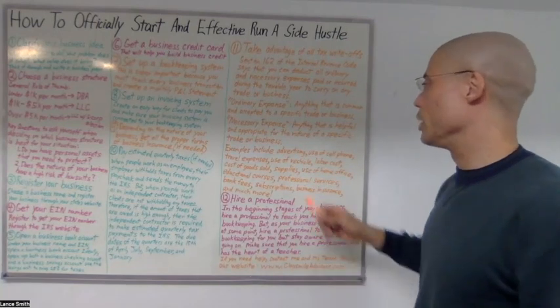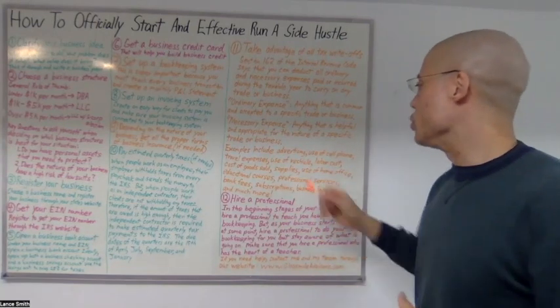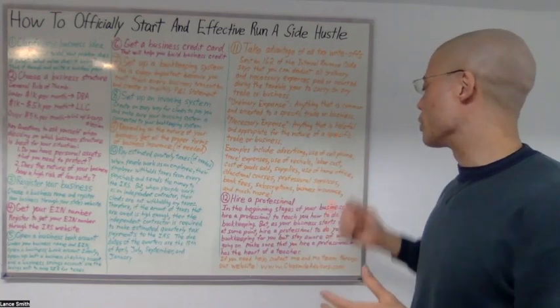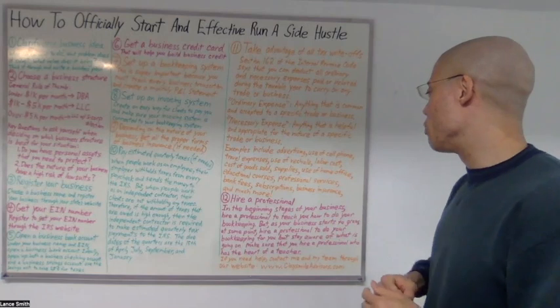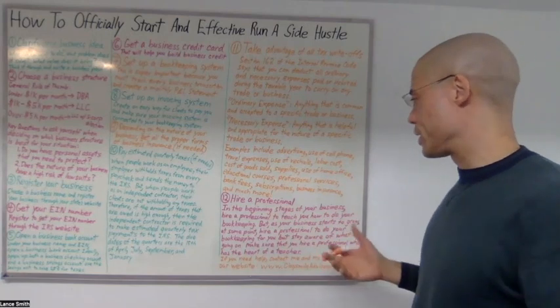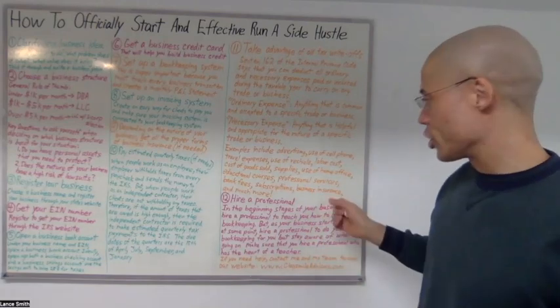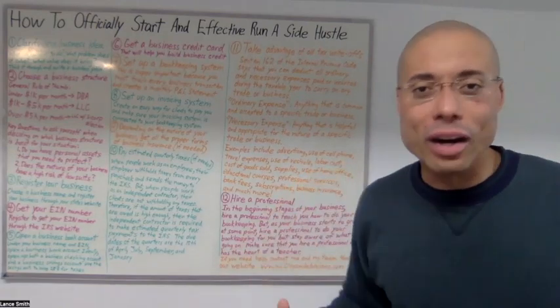We can deduct all ordinary and necessary expenses paid or incurred during the taxable year to carry on any trade or business. Examples include advertising, use of cell phone, travel expenses, use of vehicle, labor costs, costs of goods sold, supplies, use of home office, educational courses, professional services, bank fees, subscriptions, business insurance, and much more.